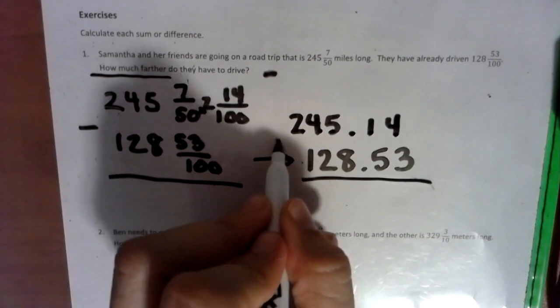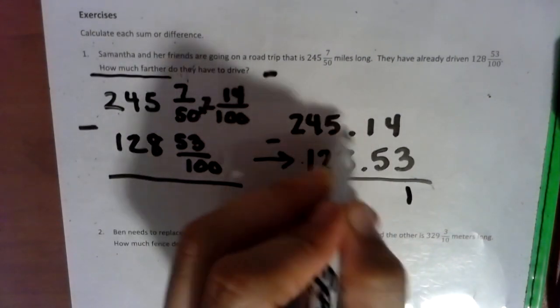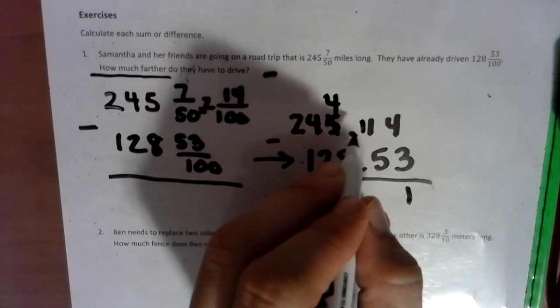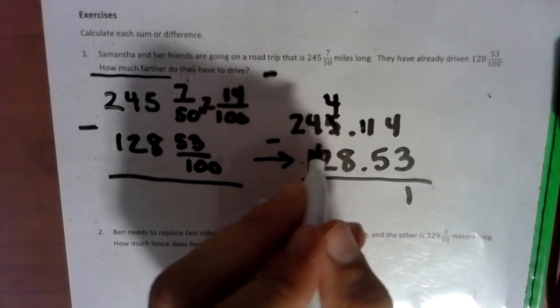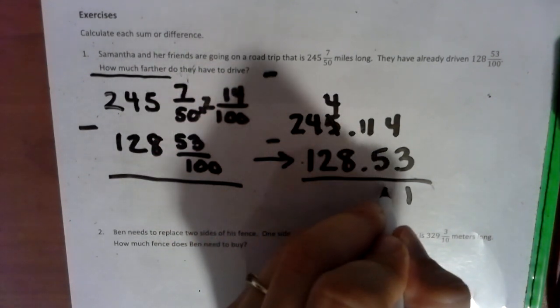So we can transfer that to 245 and 14 hundredths. And now we are ready for a subtraction problem. 4 takes away 3, gives you 1. 1 can't take 5, so we borrow. Notice I'm borrowing one at a time. That's how you truly should be doing this. You shouldn't be going all the way over here and start hacking these numbers off. We should go baby steps at a time so you don't make any error.